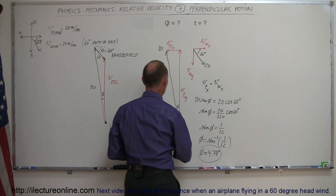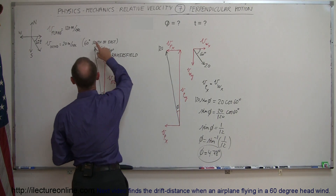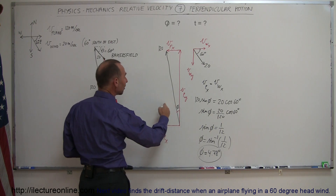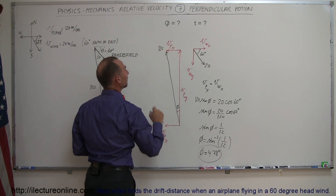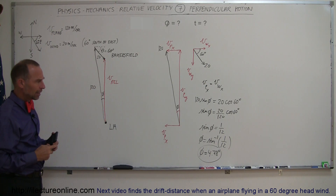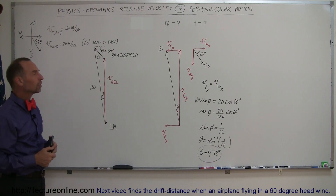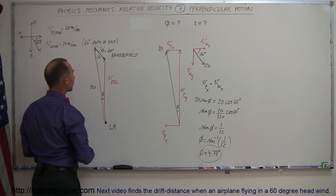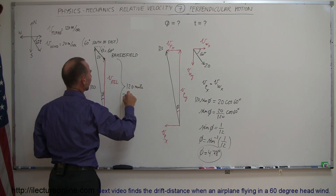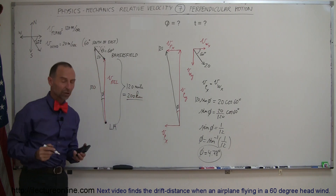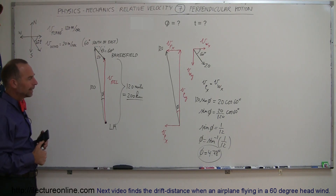So the pilot, knowing the wind conditions and how fast the plane can fly, should fly in a direction 4.78 degrees west of north, and he'll reach Bakersfield. Now, if we want to know how long it will take, let's say the distance between LA and Bakersfield is about 200 kilometers, or 200,000 meters.